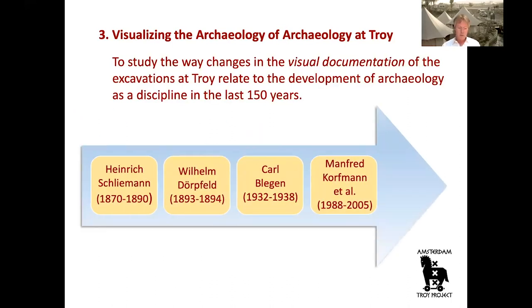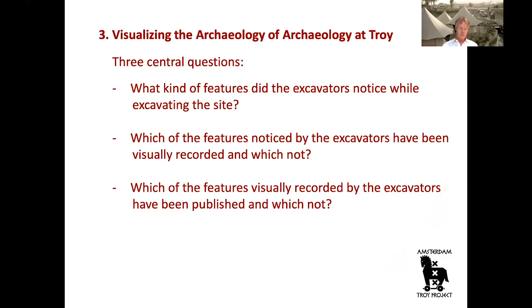Archaeological work at Troy began more than a century ago and continues to the present day. The excavations can be divided into four groups based on the project directors: Heinrich Schliemann, Wilhelm Dörpfeld, Karl Blegen, and Manfred Korfmann. Three central questions have been formulated: What kind of features did the excavators notice while excavating the site? Which of the features noticed by the excavators have been visually recorded and which not? And which of the features visually recorded by the excavators have been published and which not? To answer these questions, we will use published sources, archival records, and hopefully also available informal documentation.